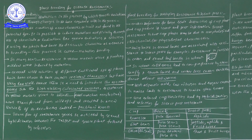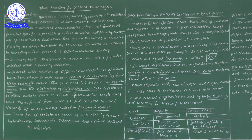By following plant breeding methods, we are going to develop plants which definitely show resistance to insect pests. Insect resistance in host crops may be due to morphological changes, biochemical, and physiological characteristics.